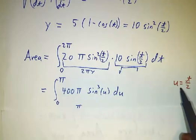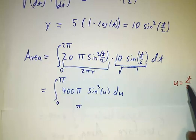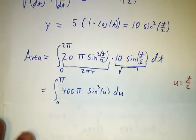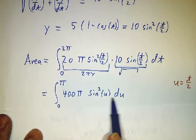Since t goes from 0 to 2π, u, which is half that big, goes from 0 to π. Then we just have to do the integral of sin³(u)du.